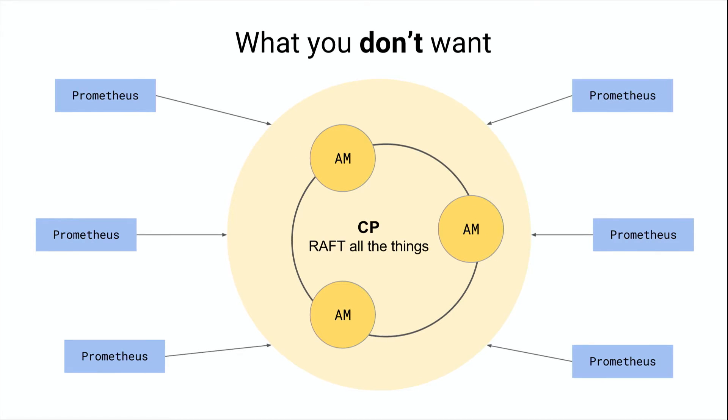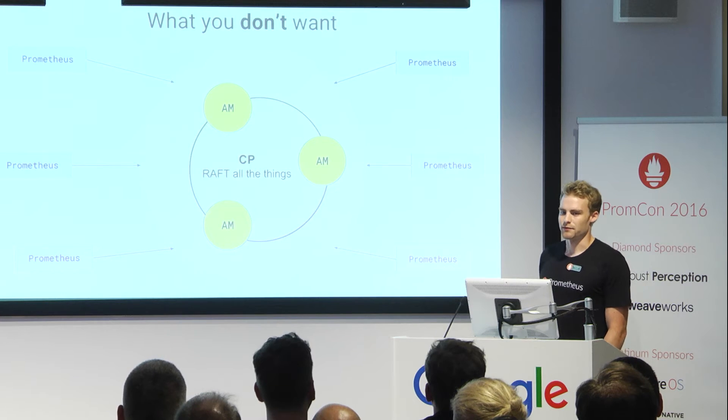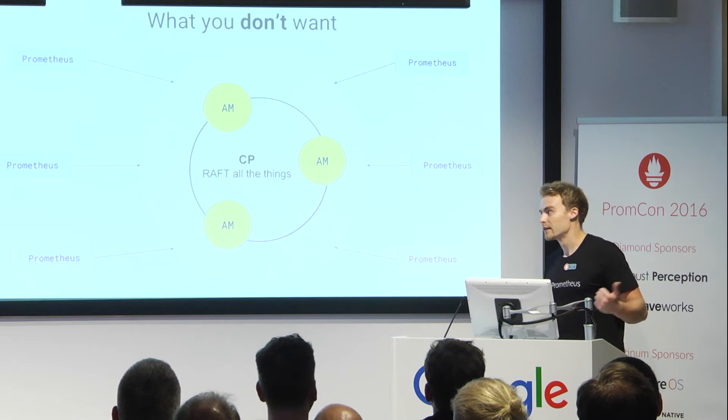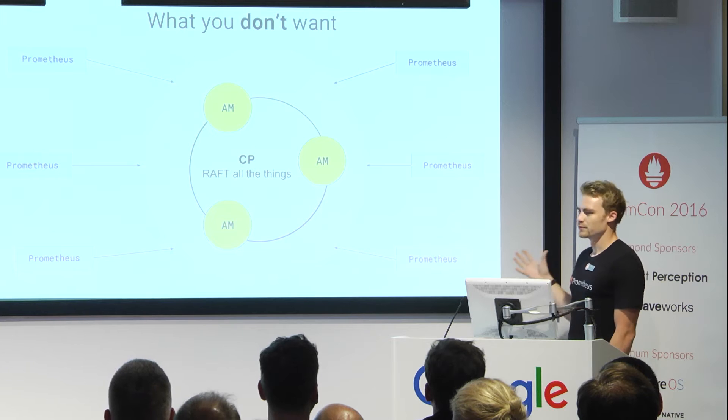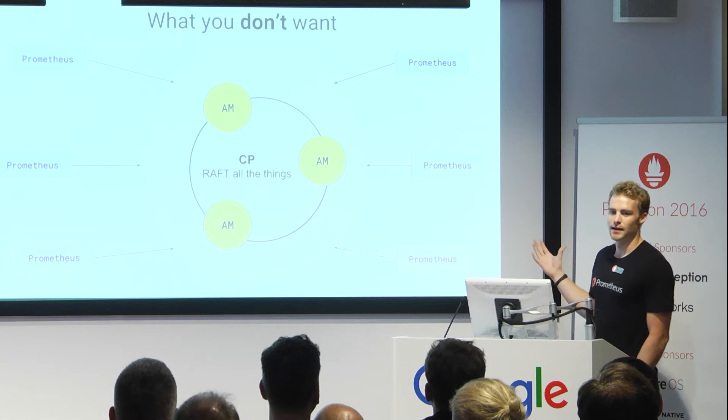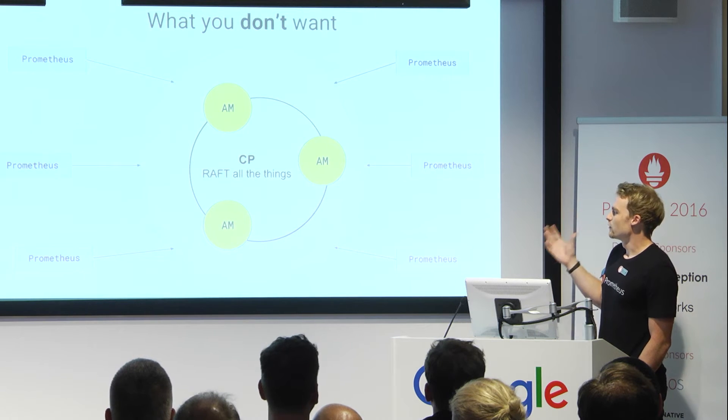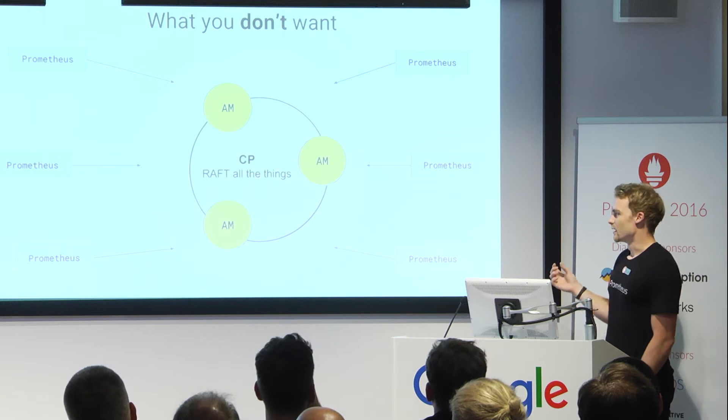So what you don't want is this one, and this is basically what everybody comes up with if they talk about making HA Alert Manager on IRC. It basically calls, okay, everybody's using Raft and Raft is doing CP so this must be great, right? The only thing is that Raft is a CP algorithm and it works based on consensus and you can only do something basically if you have consensus.